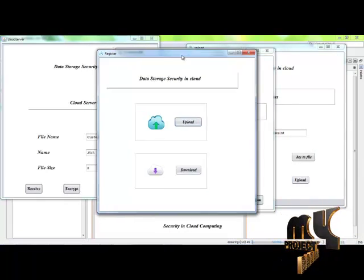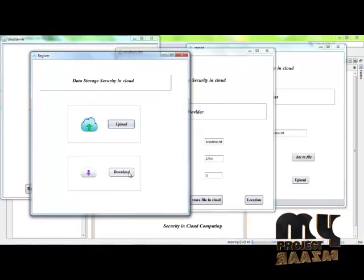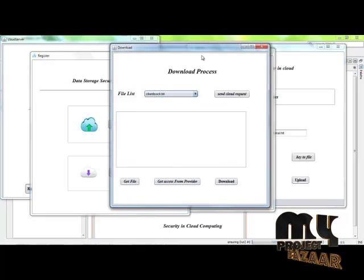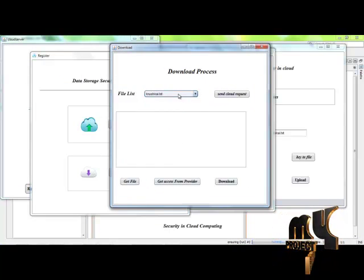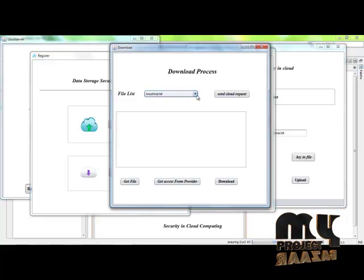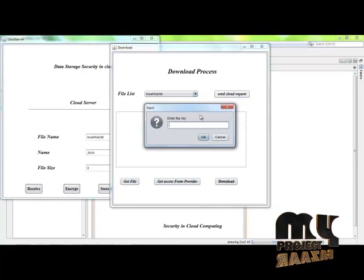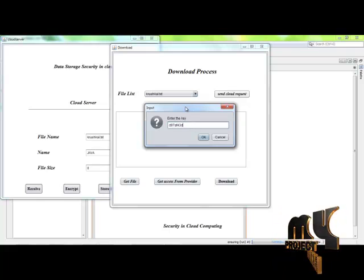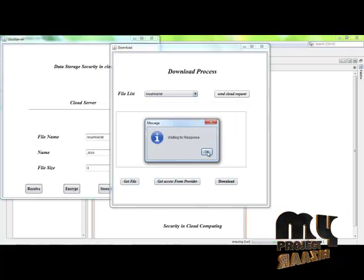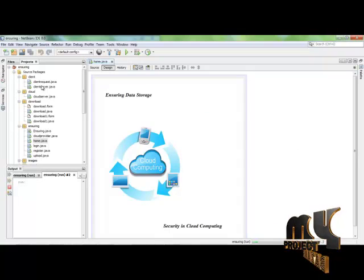After that, we want to download. Click on the download button. Select the file and send the request. The key can be typed in.